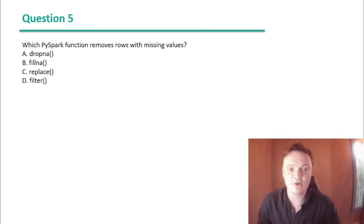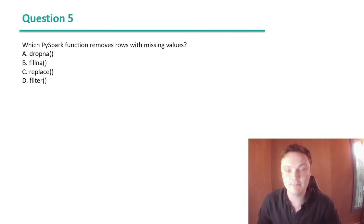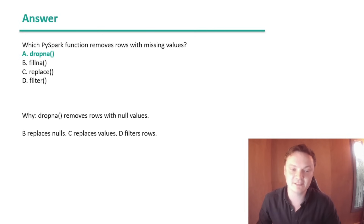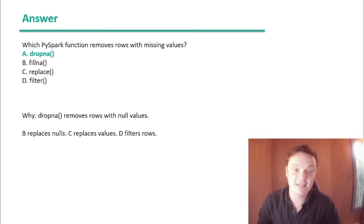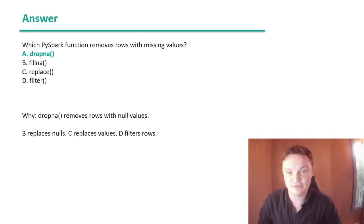Question 5: Which PySpark function removes rows with missing values? A. dropNA. B. fillNA. C. replace. Or D. filter. The answer is dropNA, as it removes rows with null values. fillNA replaces nulls, replace replaces values, and filter filters rows.